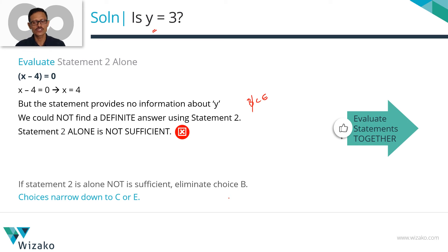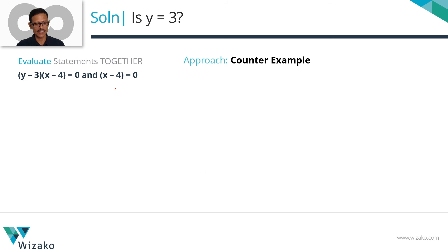All that is left is to combine that, evaluate the statements together and check whether it is C or E. Evaluate them together. (x-4) equals 0 from statement 2. So we know that x is equal to 4. From statement 1, we know (y-3)(x-4) equals 0. So let's plug in this x equal to 4 in this. So y could be—I am using a counter-example. Let's go with it, right? x equals 4 is established from statement 2.